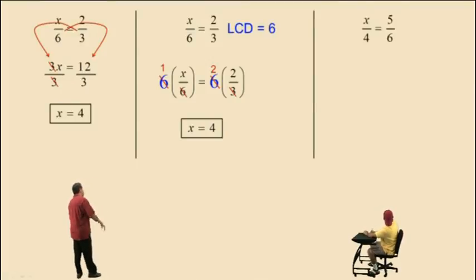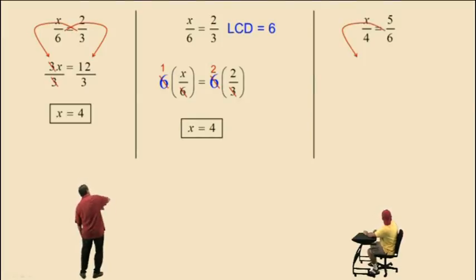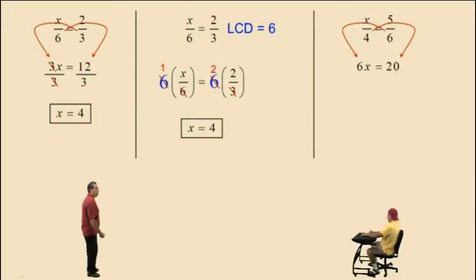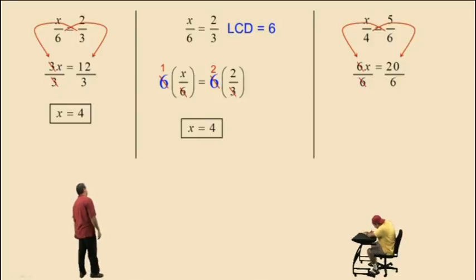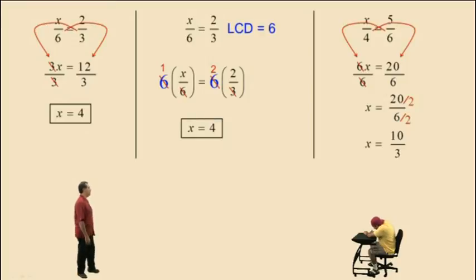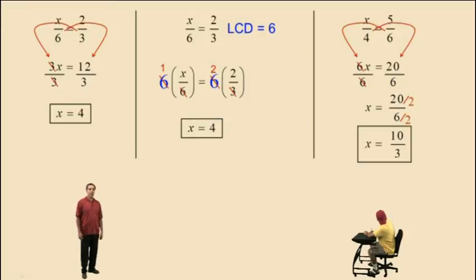All right Charlie, let's go to this one: x over 4 equals 5 over 6. Let's cross multiply. What's 6 times x? 6x. And what's 4 times 5? 20. Very nice, Charlie. Now let's divide both sides by 6, and we get x equals 20 over 6. But that fraction reduces to 10 thirds. And that's our final answer.